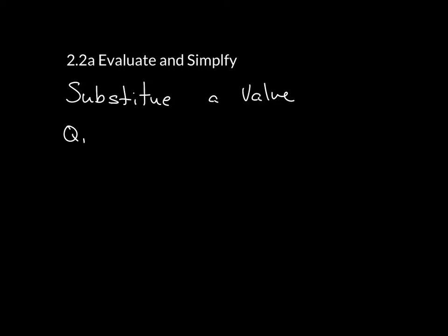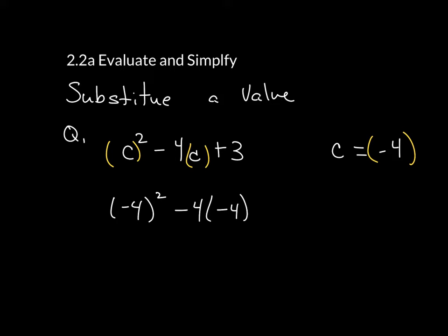Question one starts off with c squared minus 4c plus 3, and they also tell us that c is equal to negative 4. Now the key thing that we're doing here is wherever you see c, make sure you put in parentheses. And then inside this equation, you're going to be replacing both of those c's with this negative 4. So I rewrite this as negative 4 quantity squared minus 4 times negative 4 plus 3.